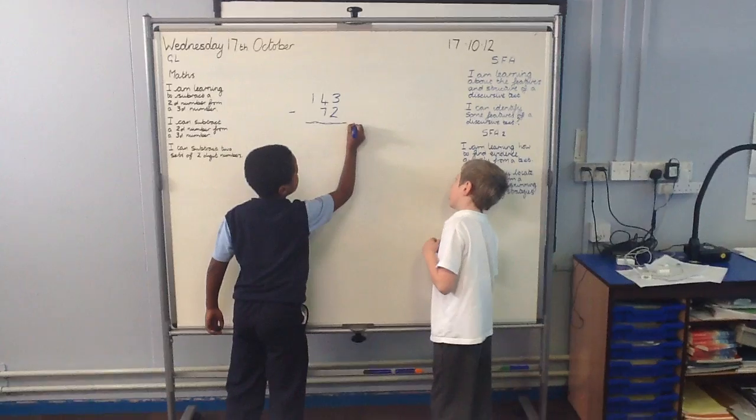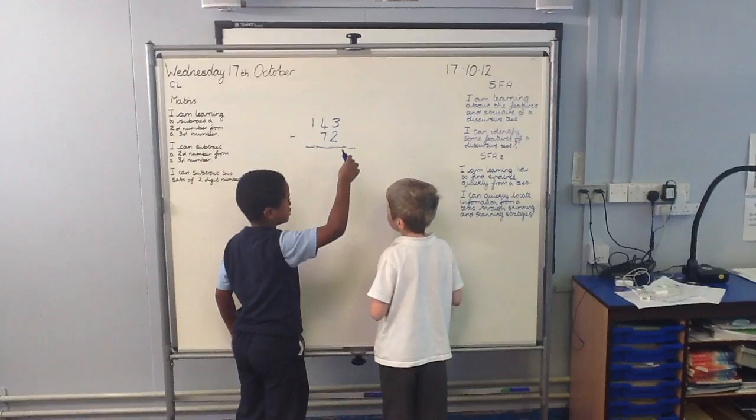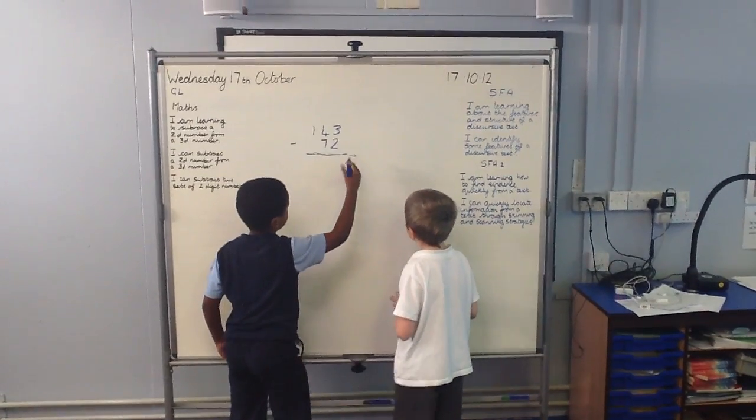You put an arrow there. So you're going to the nearest ten, and that's going to be 80.